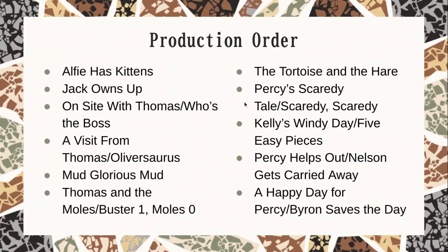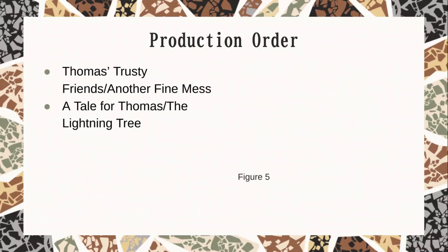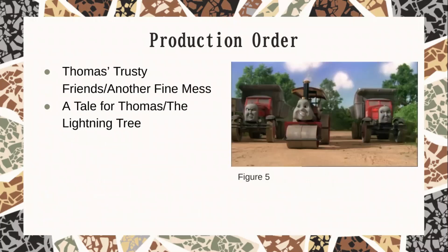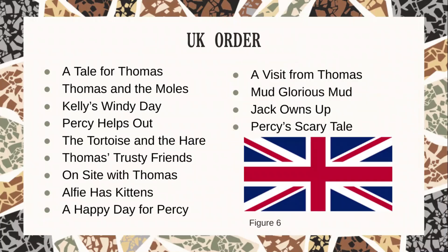So you have production on front, left to right: Alfie Has Kittens, Jack Owns Up, On Site With Thomas Who's the Boss, A Visit From Thomas/Oliver's Saurus, Mud Glorious Mud, Thomas and the Moles, Buster 1 Moles 0. They did a lot of manipulation, but they include Thomas and Percy because they're Thomas-Percy glazers.